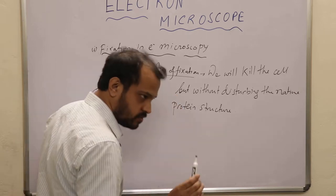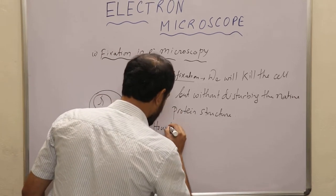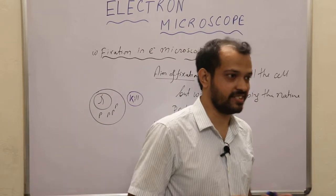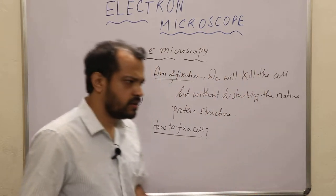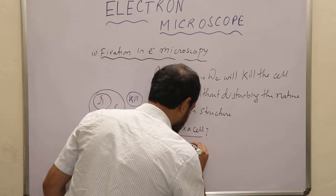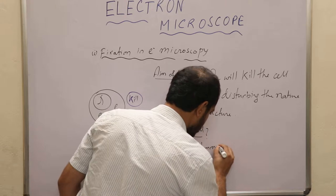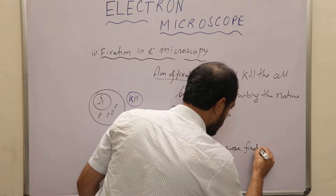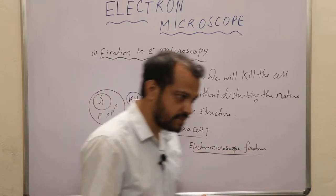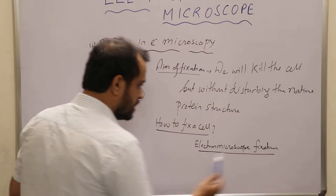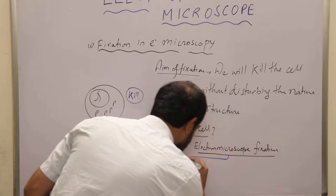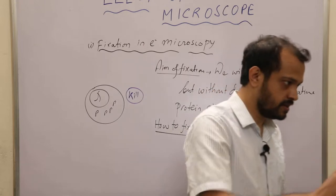The basic aim of fixation — we now know how to achieve fixation, how to fix a cell. This is the basic question again: how to fix a cell, how we can kill a cell without actually destroying its structure. That is the very basic concept. In electron microscopy, the chemicals we use for fixation are known as electron microscope fixatives. Any fixative is a chemical which fixes the cell.